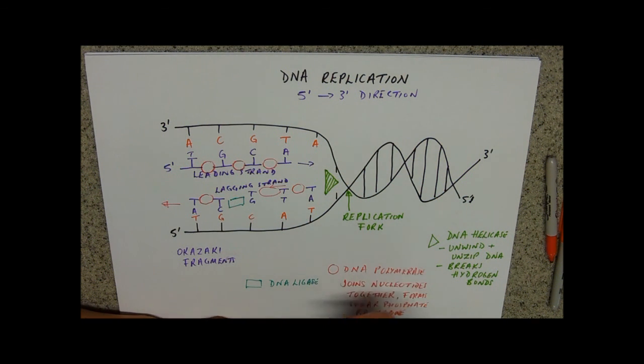It's what the Amoeba Sisters describe as the glue. So it joins, again, the sugar phosphate backbone. Join the Okazaki fragments. So that you get a continuous strand.